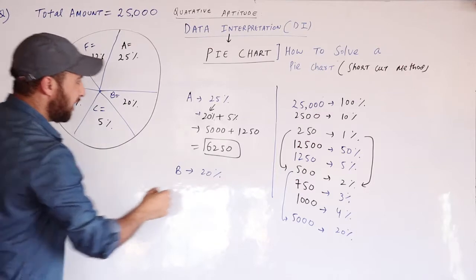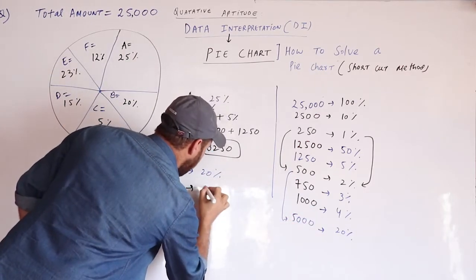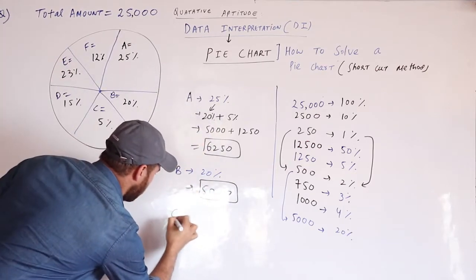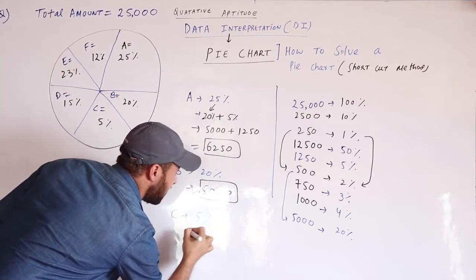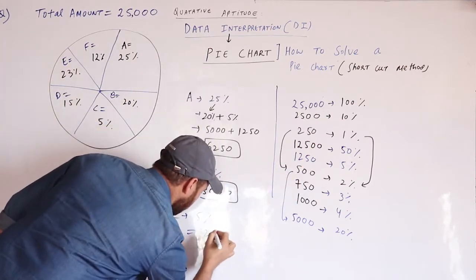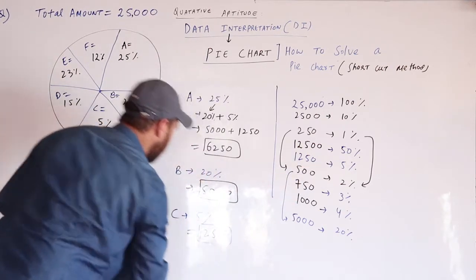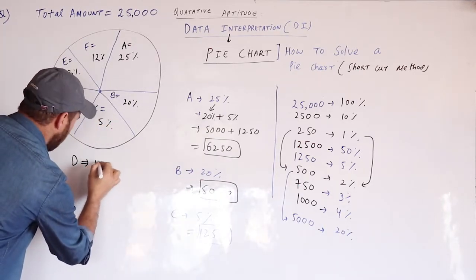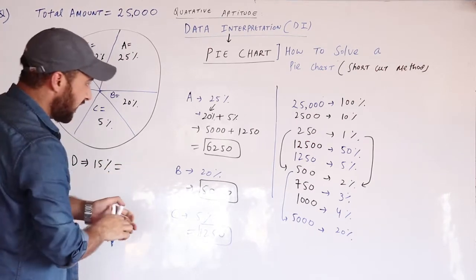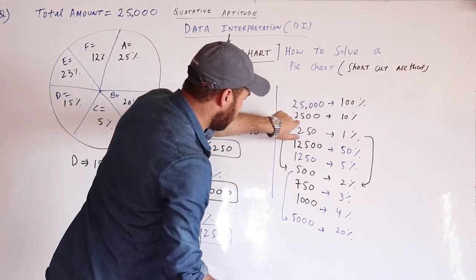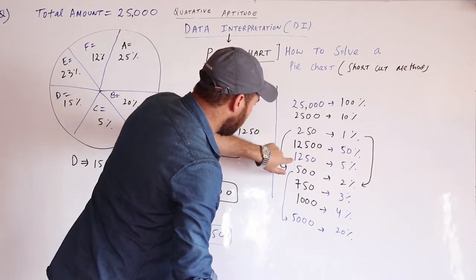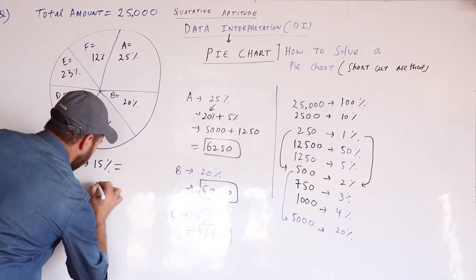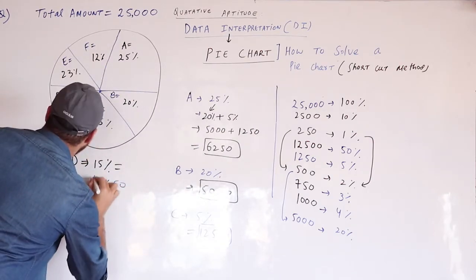For Person B, 20% of 25,000 is 5,000. For Person C, 5% of 25,000 is 1,250. Now for Person D, who spends 15%: 15% equals 10% plus 5%, that is 2,500 plus 1,250, which equals 3,750.